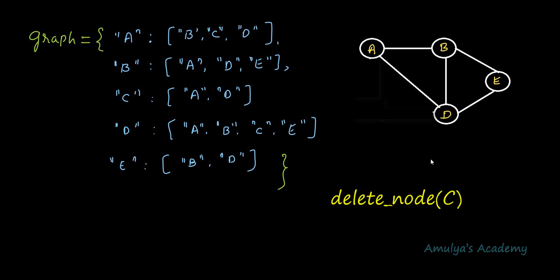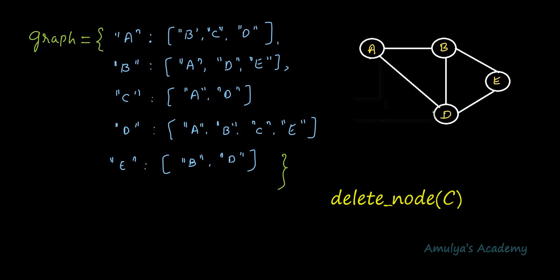For the adjacency list representation we are using dictionaries, where the key represents the nodes of the graph and the value represents the list of adjacent nodes. When I delete node C, the first step is to delete that key-value pair from the dictionary. Next, we need to check the value of every key — the value is a list — and check whether the deleted node C is present in that list. If C is present, we need to remove it from the list.